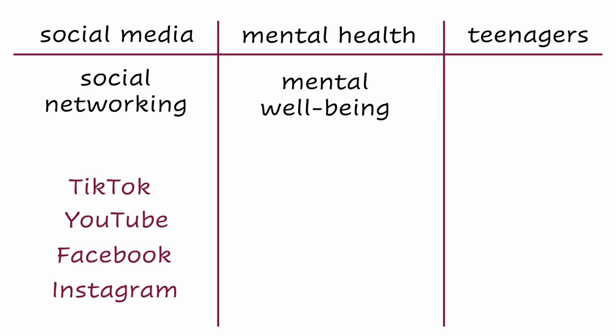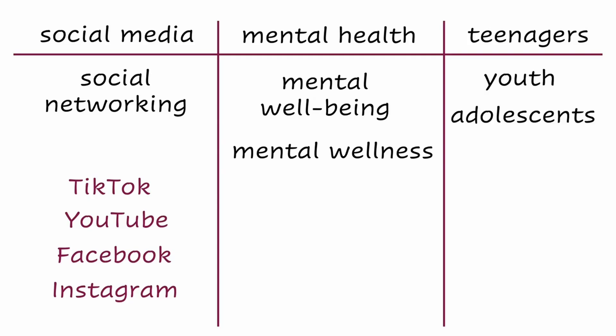'Mental well-being' and 'mental wellness' are both terms I've seen used in place of 'mental health' online, and I know that academic research is more likely to use the terms 'youth' or 'adolescents' for teenagers. This is especially true for researchers in psychology, where I would expect to find a lot of research on this topic. There is no magic number of alternative terms — you might think of several alternatives for one term, but only one or two for others. If you have trouble coming up with alternatives for any of your keywords, it might help to think about what fields of study would cover your topic and include the types of terms used in that field, like we did with psychology and teenagers to get 'adolescents' and 'youth.'